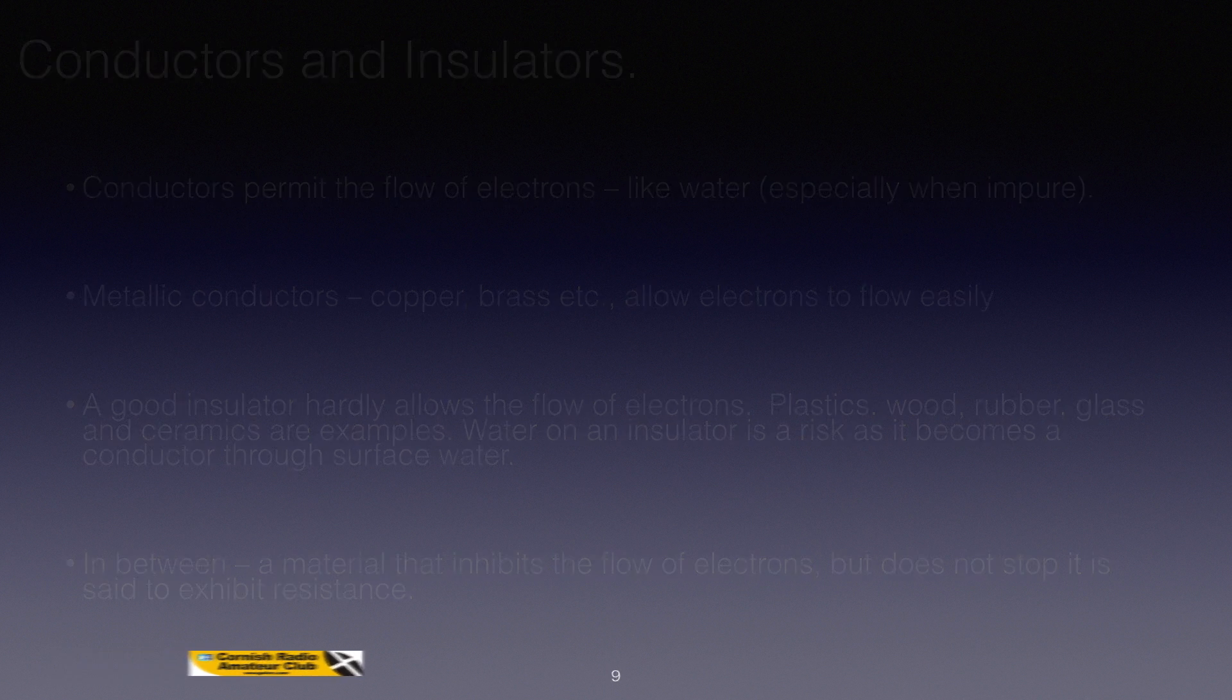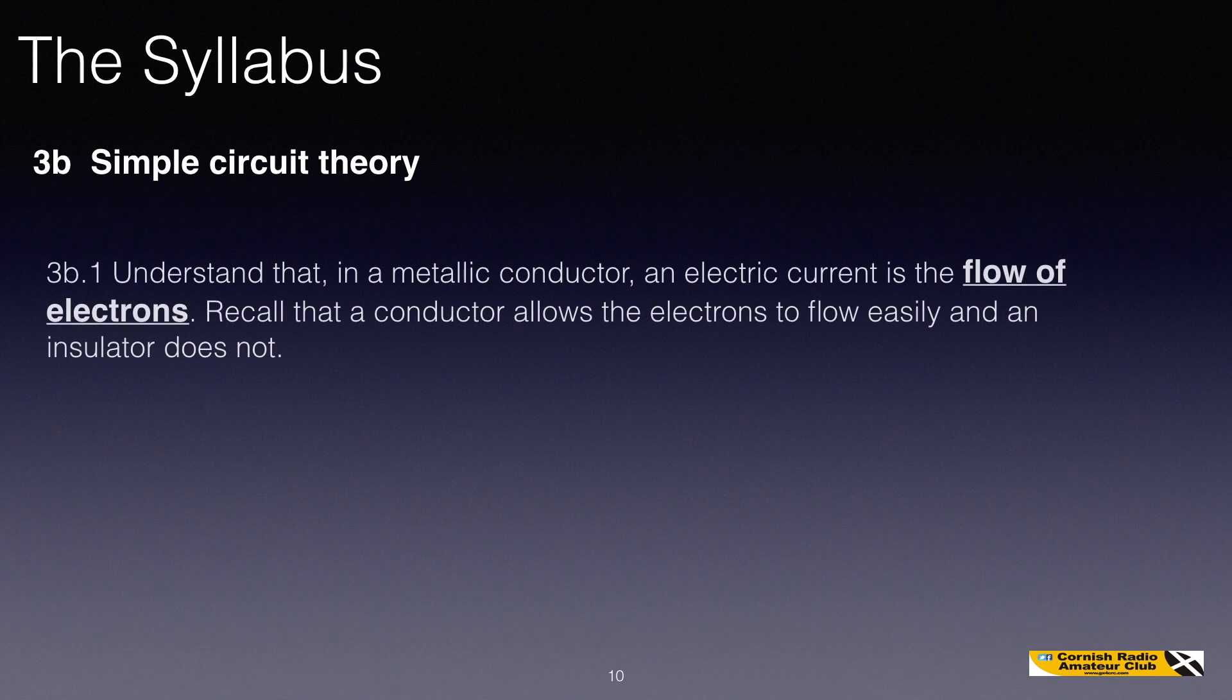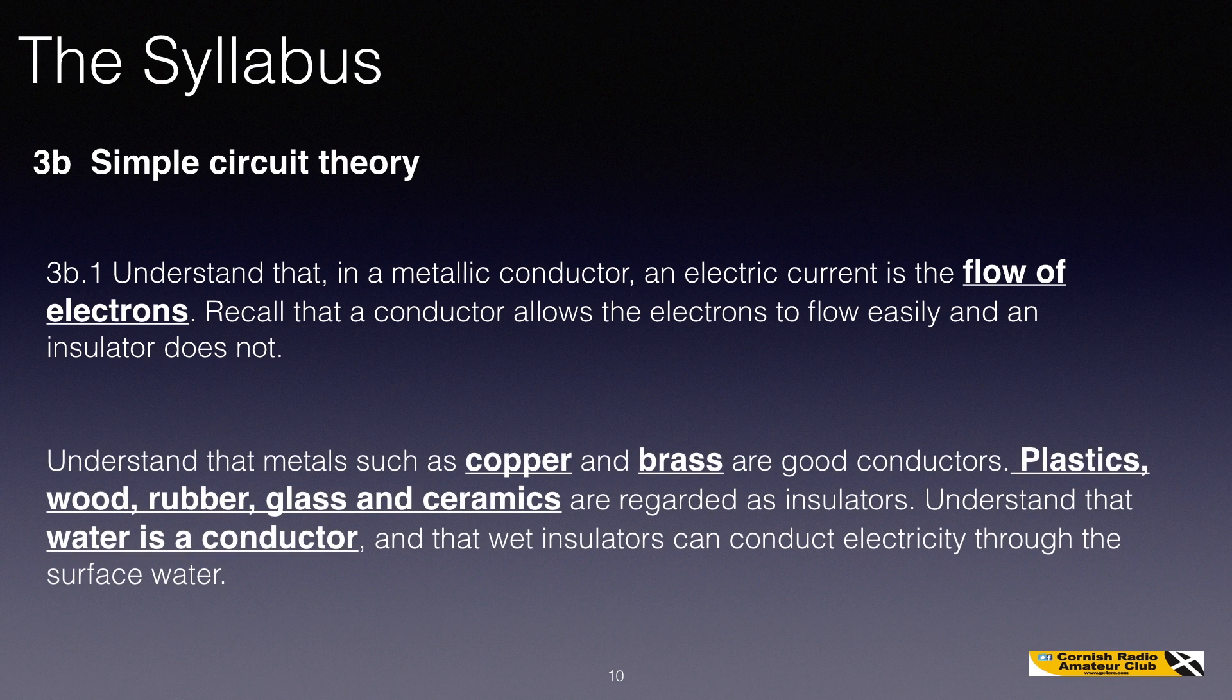Just to conclude, we'll go back and have a look at the syllabus items. Understand that in a metallic conductor, an electric current is the flow of electrons. Recall that a conductor allows electrons to flow easily and an insulator does not. Understand that metals such as copper and brass are good conductors. Plastics, wood, rubber, glass and ceramics are regarded as insulators. And understand that water is a conductor and that wet insulators can conduct electricity through the surface water.